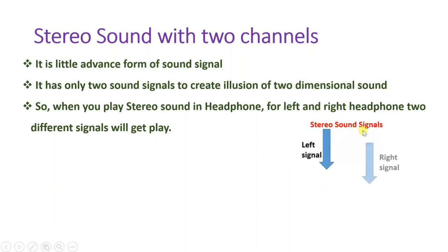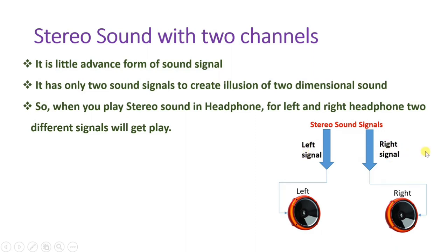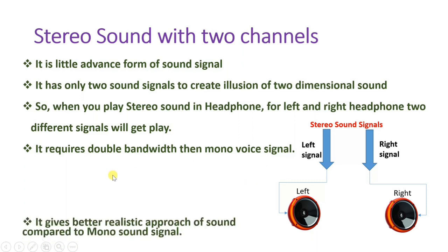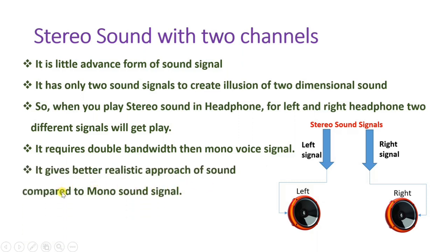In stereo sound, you have two signals — a left signal and a right signal. The left signal is given to the left headphone speaker and the right signal is given to the right headphone speaker. By having two different signals you get the illusion of two-dimensional sound. Stereo requires double the bandwidth compared to a mono voice signal since there are two signals.